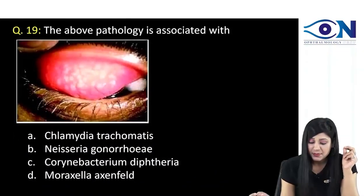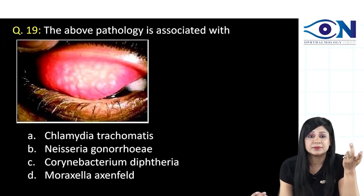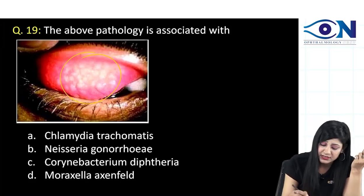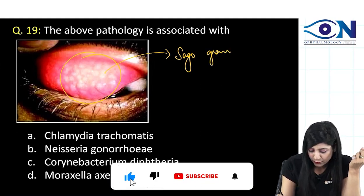Next question, the above pathology is related with or is associated with. What is this? You can see the typical Sago grain follicles.